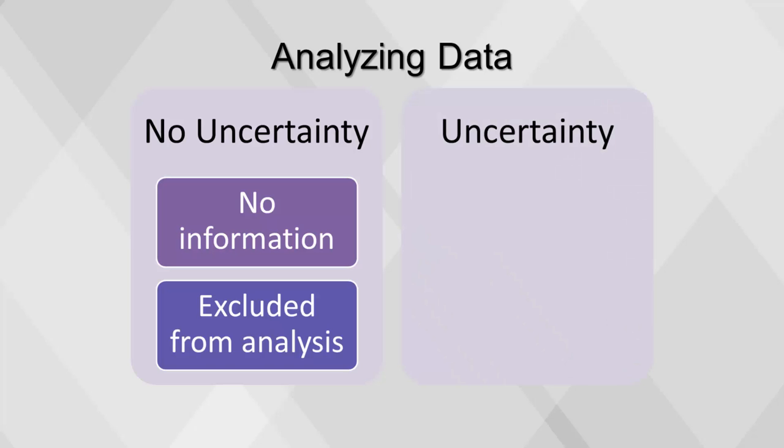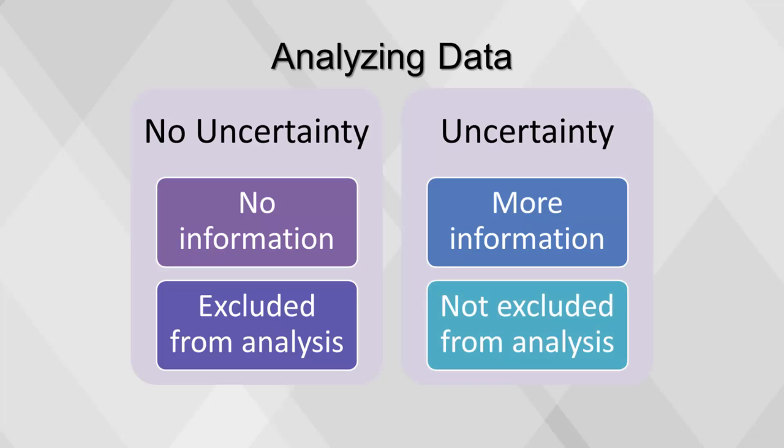On the other hand, if a variable has maximum uncertainty because it contains values that are equally likely, it will be difficult to guess the value for a new observation. These variables are not excluded from analysis.